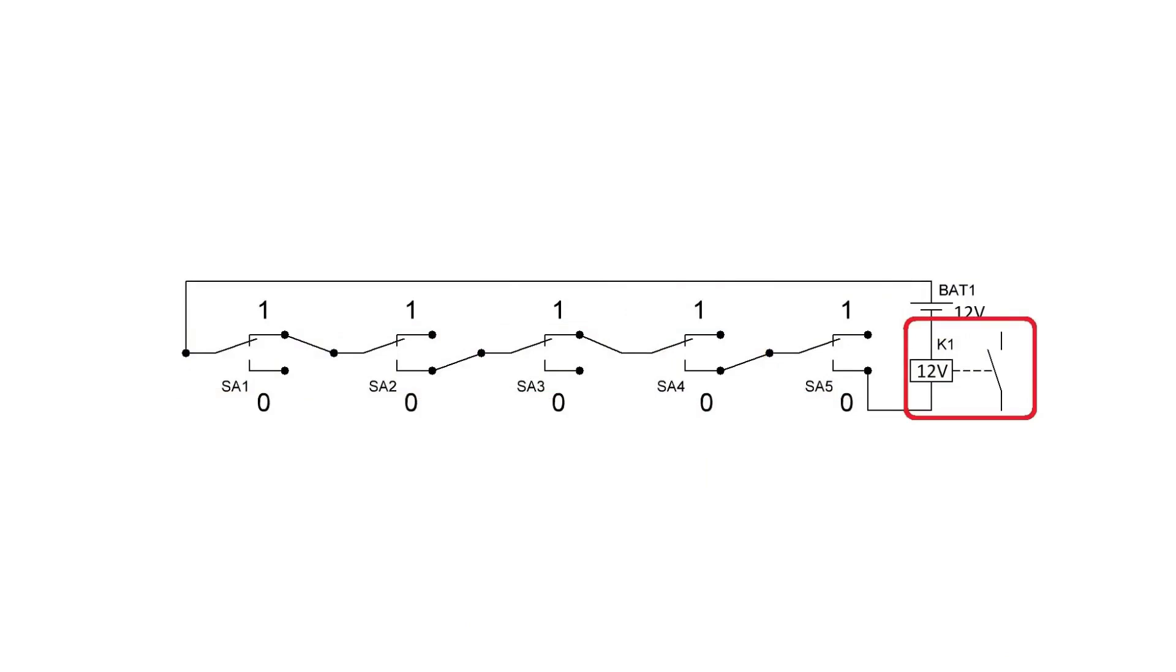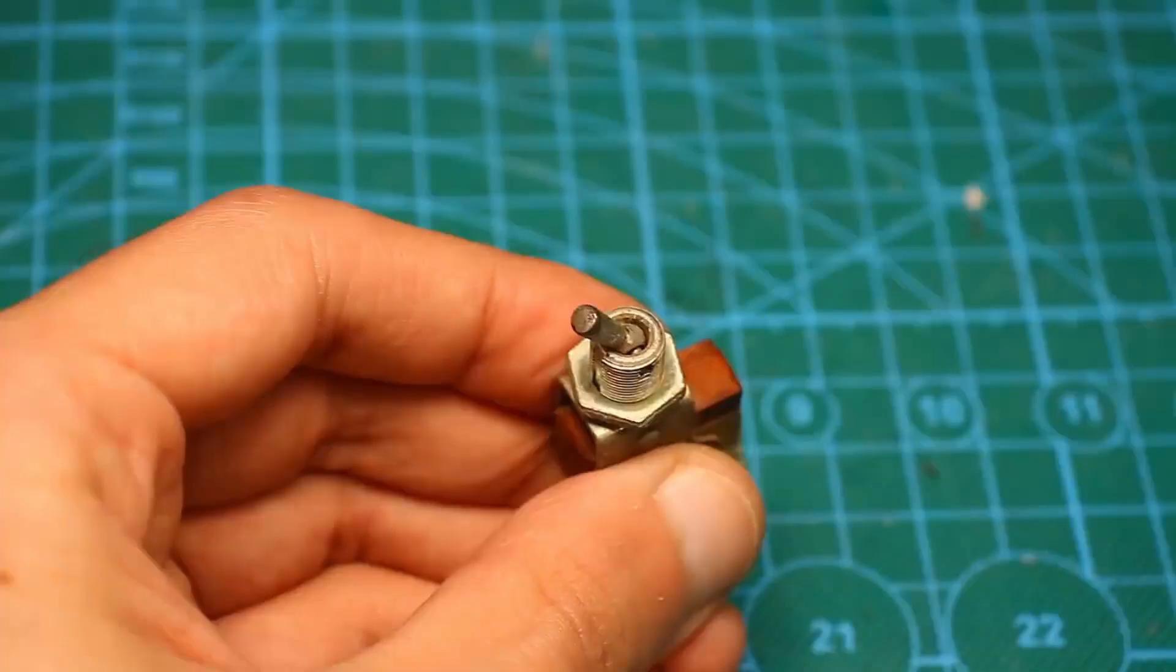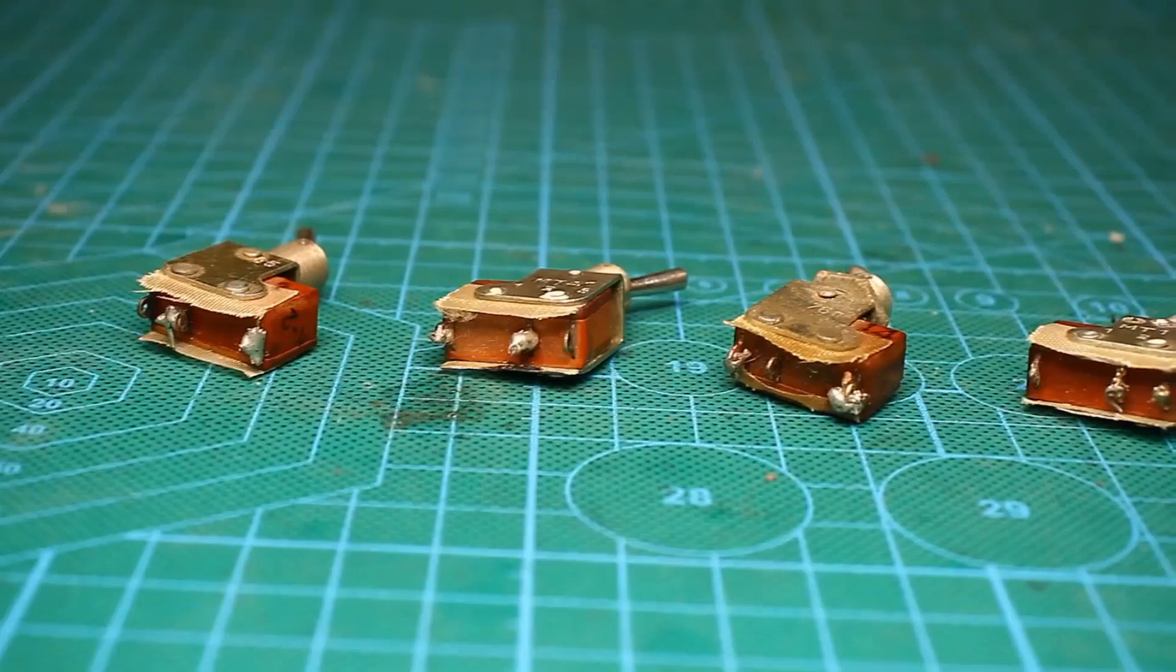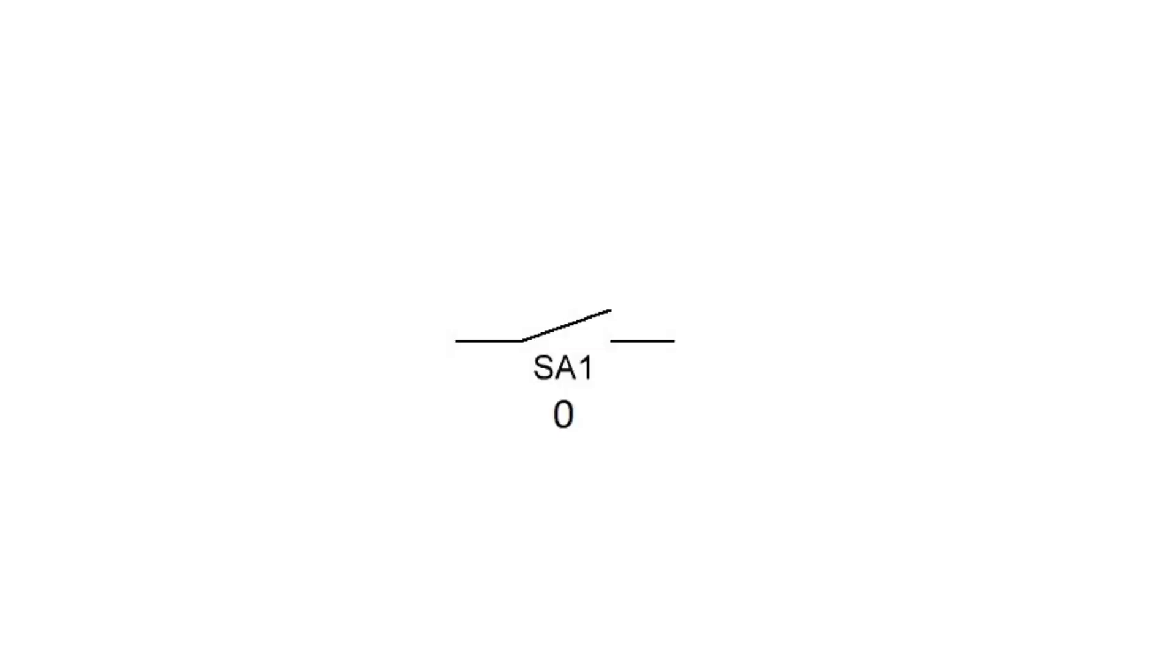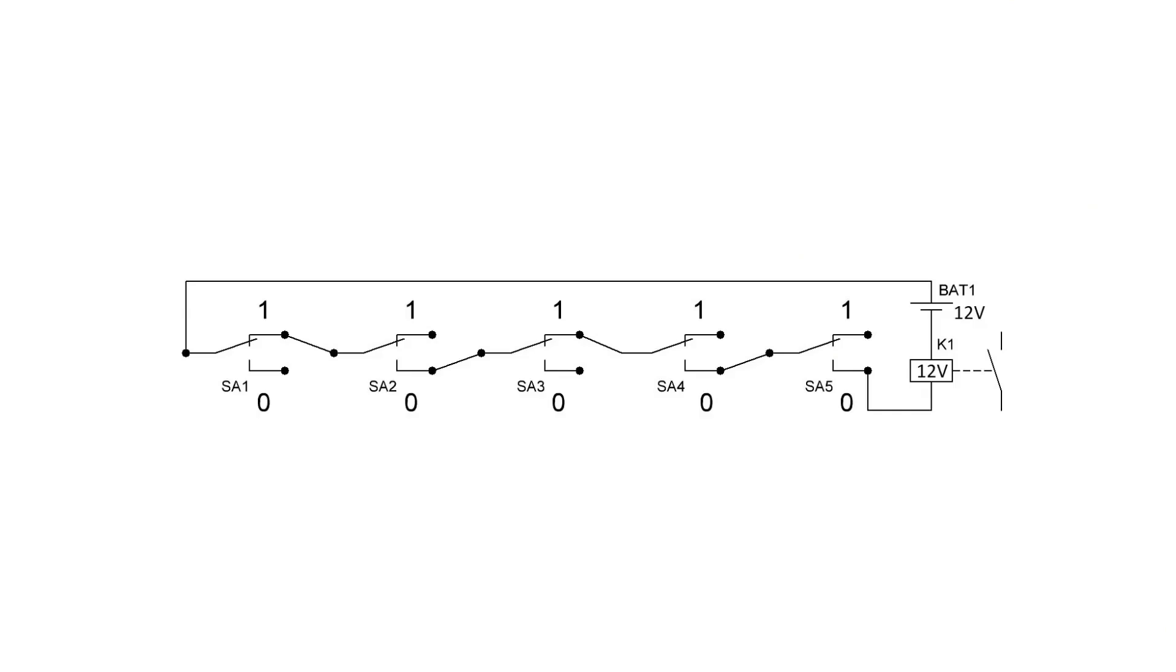The latter allows for controlling any loads if the correct password is entered. Our lock consists of only five switches. Each of them has two states, either on or off. And this is nothing other than binary code. On is one, off is zero. The switches are connected to each other randomly. The correct cipher or combination will mean that the entire circuit is closed. Therefore, for this lock, the valid password would be one, zero, one, zero, zero.